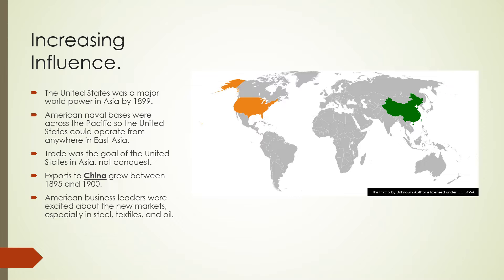The United States was a major world power in Asia by 1899. American naval bases were across the Pacific, so the United States could operate from anywhere in East Asia. Trade — not conquest — was the goal of the United States in Asia. While other European countries were expanding for political, religious, and territorial reasons, the United States was mainly expanding for trade purposes.